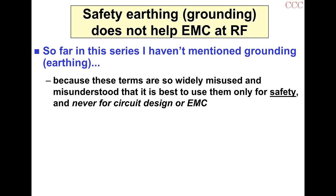Instead, use specific names: nought volts analog, nought volts digital, or whatever you choose — just call them different names. You might even have a chassis, but don't think that the chassis is an earth or a ground. It's a chassis — it's a metal connection.